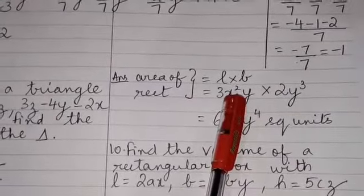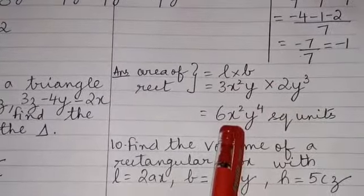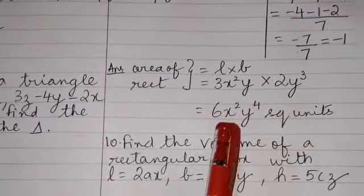So what after this? We will multiply the numbers 3 into 2, which is 6. x², there is no x term here so x² comes as it is.